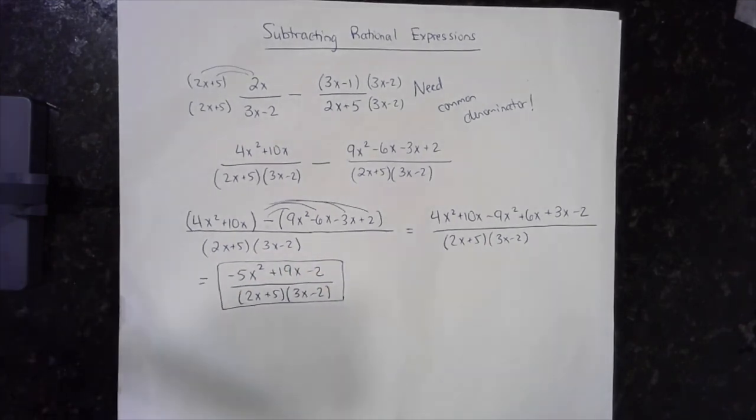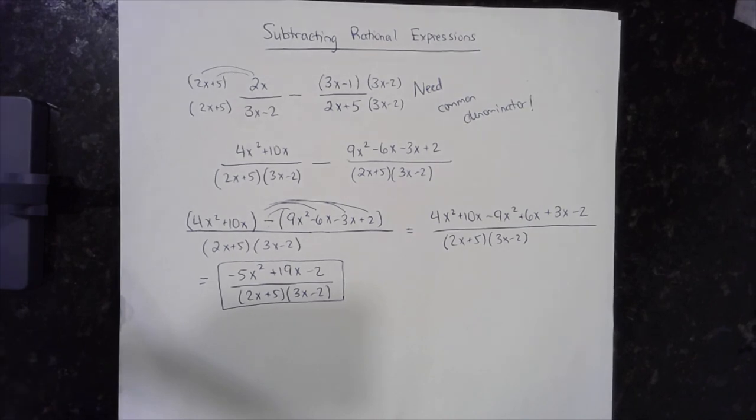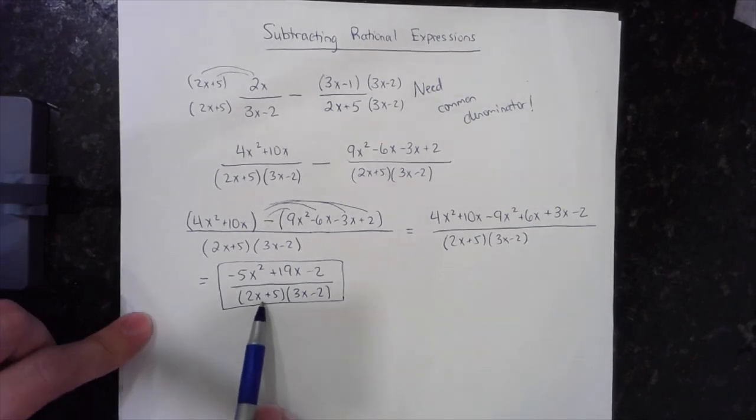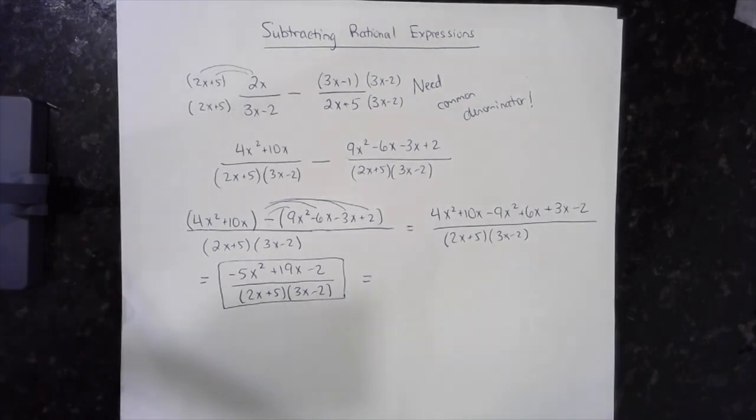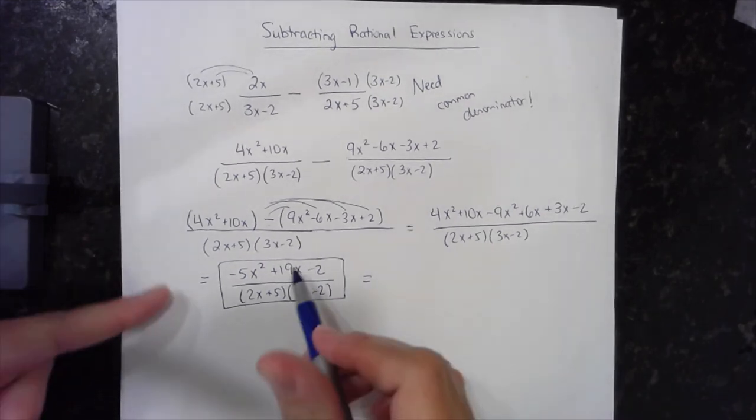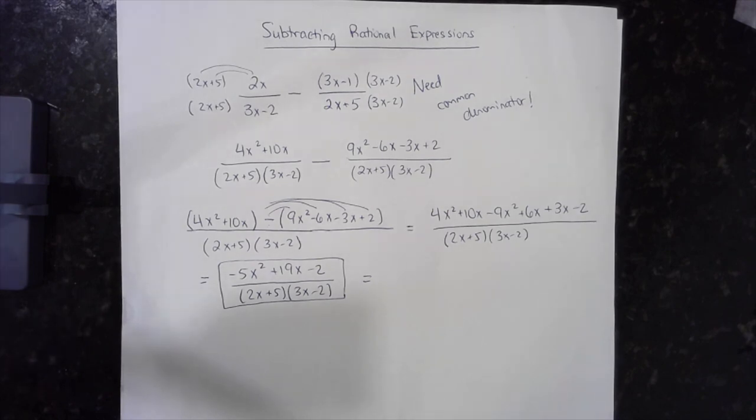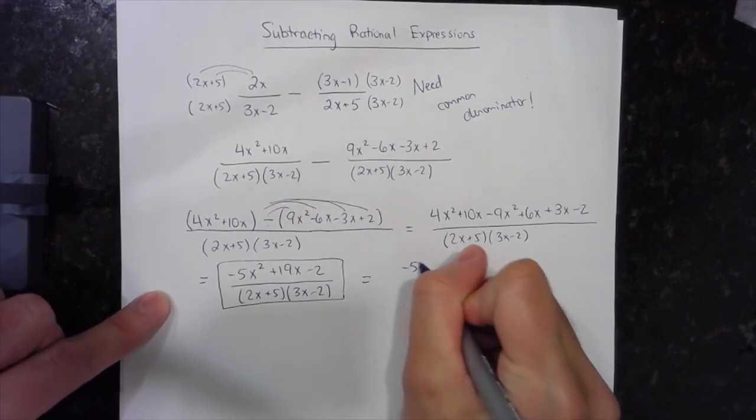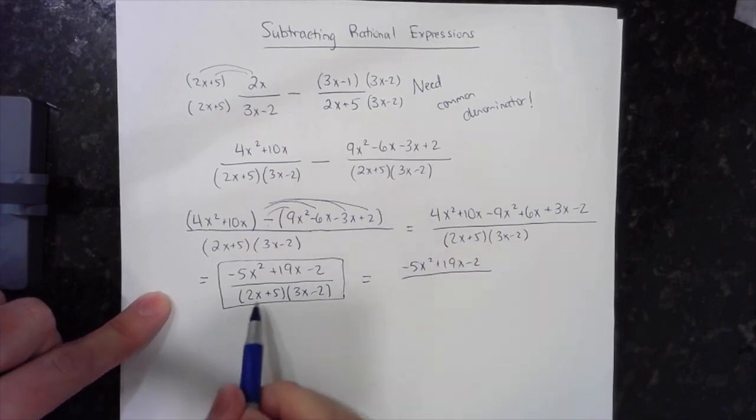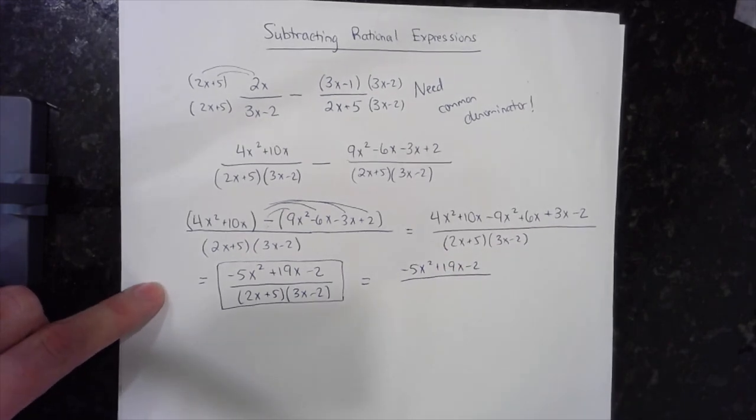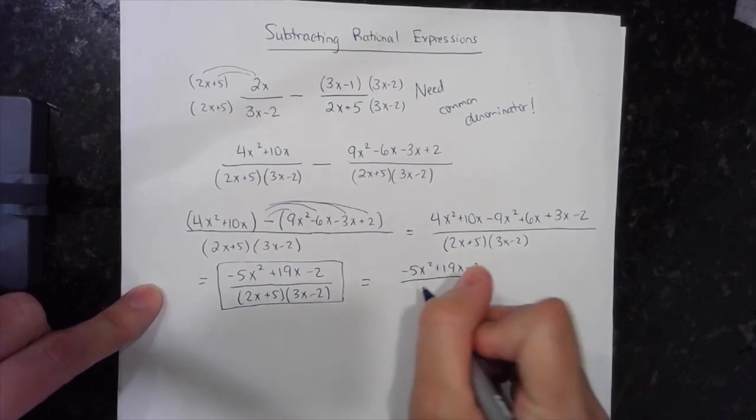Now some teachers, what they want, they do also want you, instead of leaving the bottom in factored form, they might want you to also multiply that out and put the numerator and the denominator both in standard form. So I would leave the top the same, and then I would have to multiply out the bottom to put this in a different form. So that would be another FOIL situation.